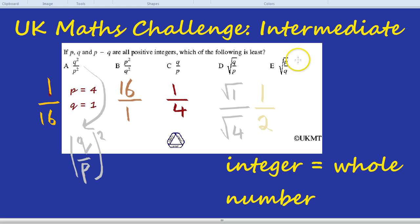And the square root of P over Q is the same thing as the square root of P, which is 4, over the square root of Q, which is 1. And that equals 2 over 1. And we saw from before, 2 over 1 just means 2. So the five expressions we have are Q squared over P squared is 1/16th. P squared over Q squared is 16. Q over P is a quarter. Root Q over P is a half. And root P over Q is 2.